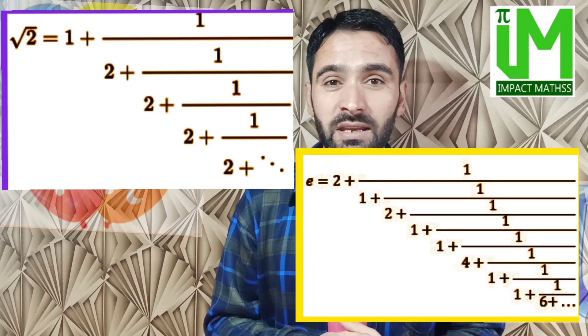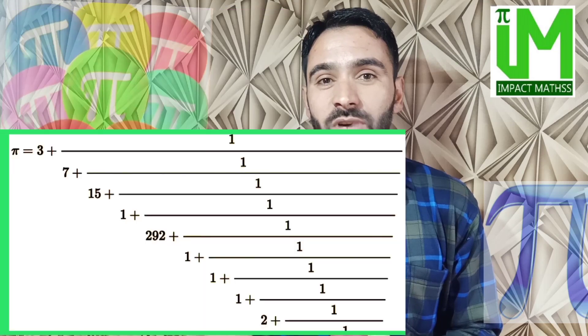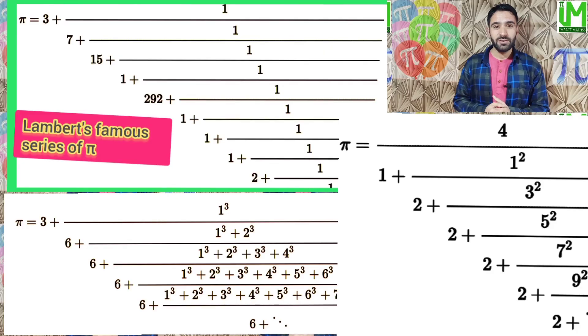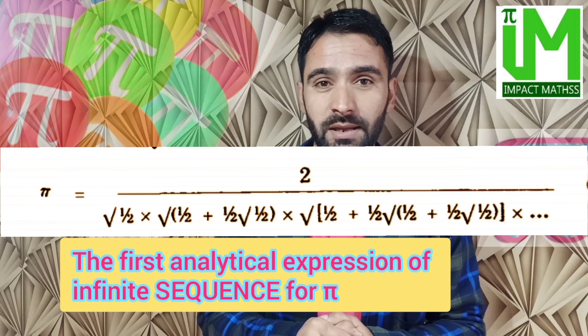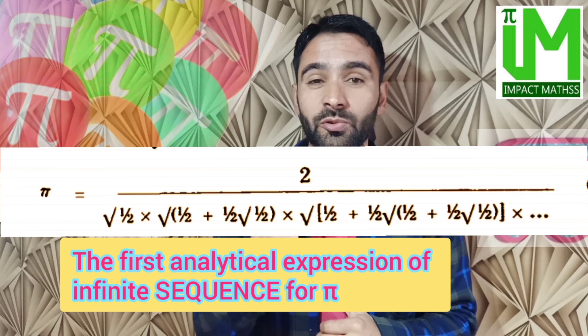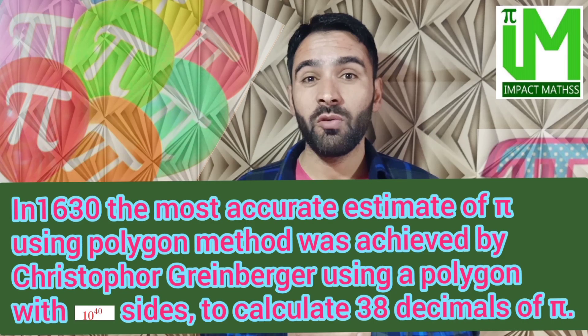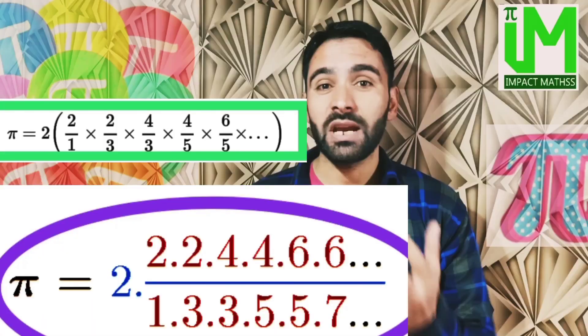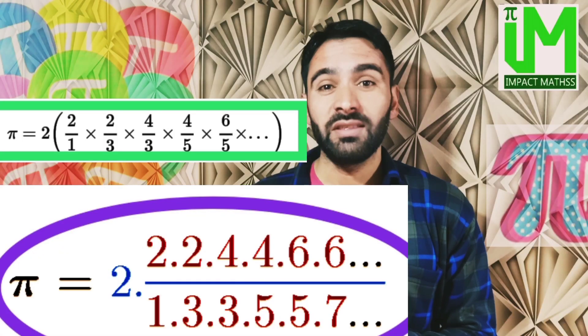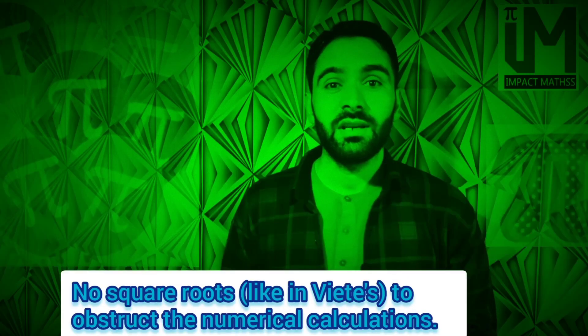From the 16th century onwards, mathematicians defined and approximated pi by infinite series and continued fractions. Every irrational number, including pi, can be represented by an infinite series of nested fractions called continued fractions, and truncating the continued fraction at any point gives a rational approximation. In 1593, François Viète found a groundbreaking irrational product for pi, making him the first mathematician to represent pi as an analytical expression of an infinite sequence of algebraic operations. In 1656, John Wallis found an infinite rational product for pi, which was more elegant than Viète's irrational product as it did not contain square root manipulations.